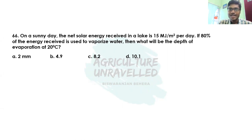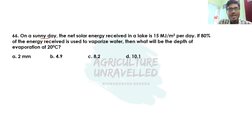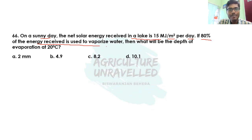So let's start. The first question is a numerical problem. On a sunny day the net solar energy received in a lake is about 15 mega joule per meter square per day. If 80 percent of the energy received is used to vaporize water, then what will be the depth of evaporation at 20 degrees Celsius?